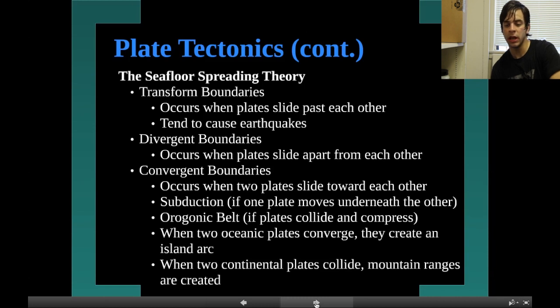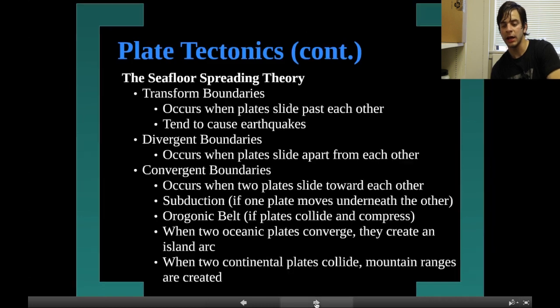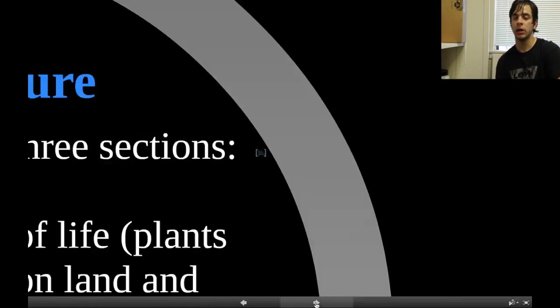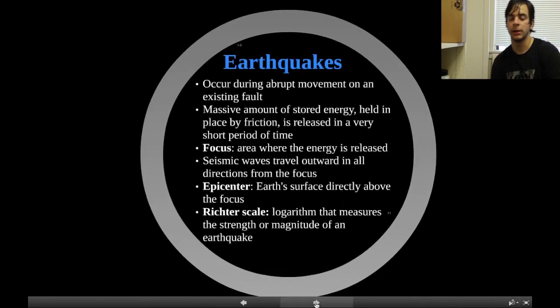When two oceanic plates converge, they create an island arc. When two continental plates collide, mountain ranges are created.